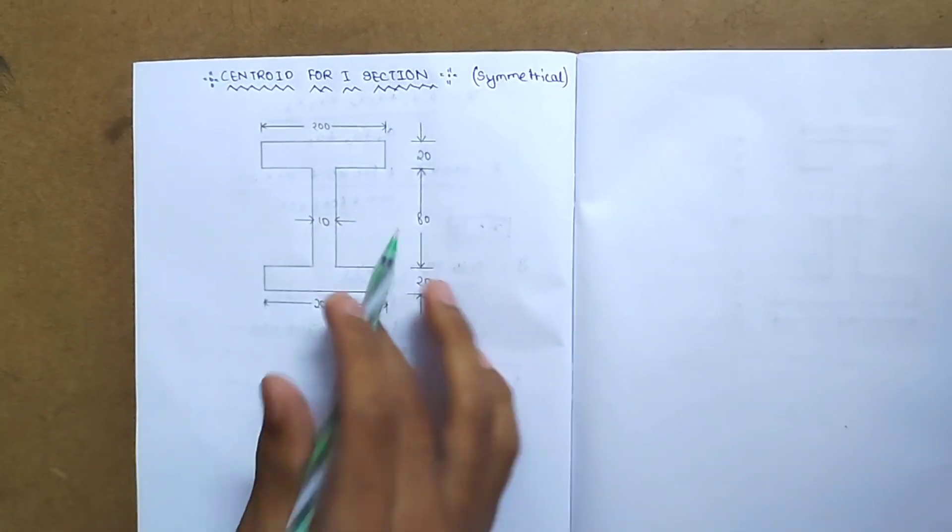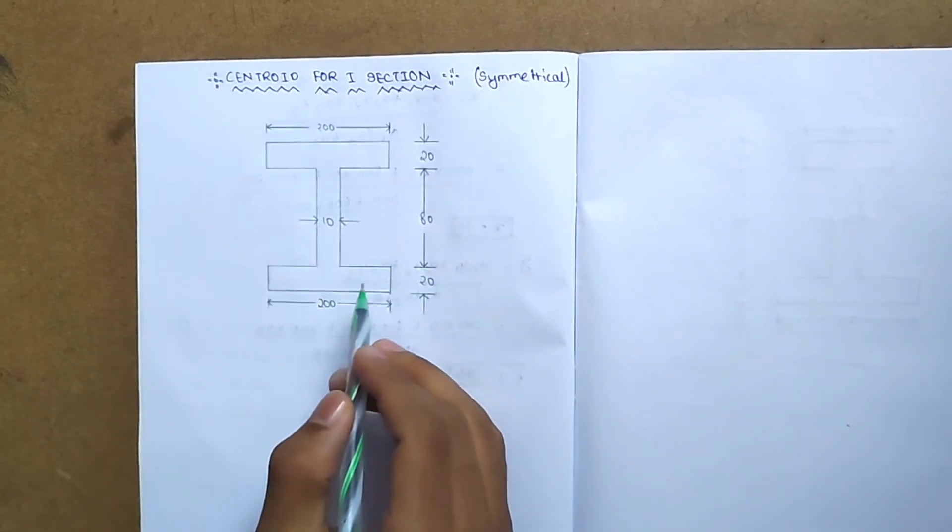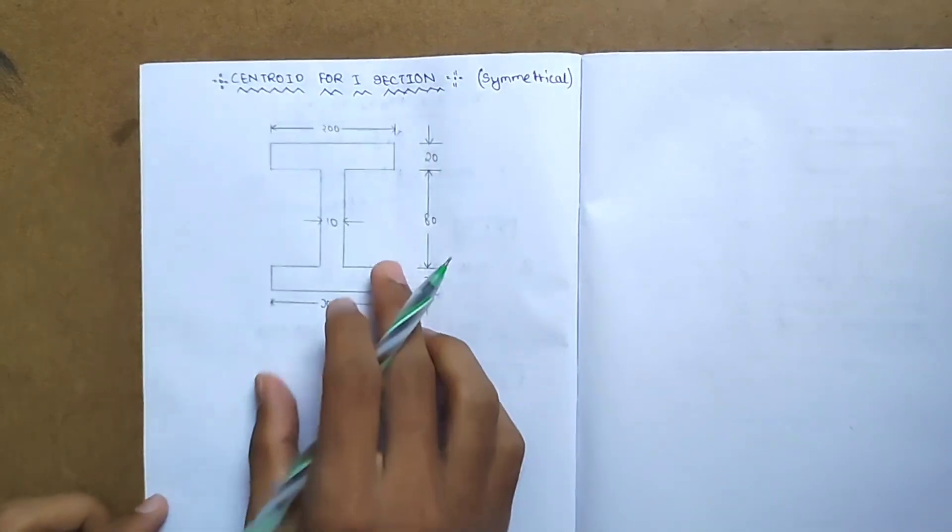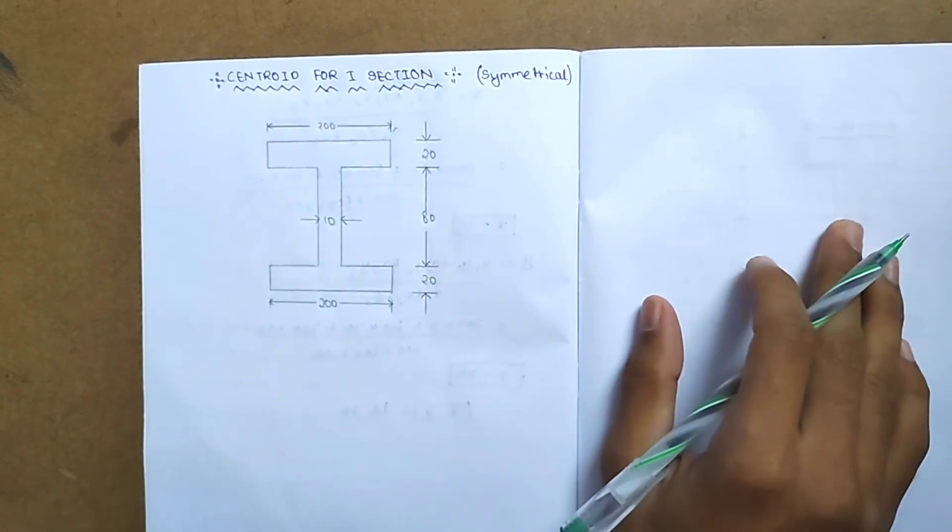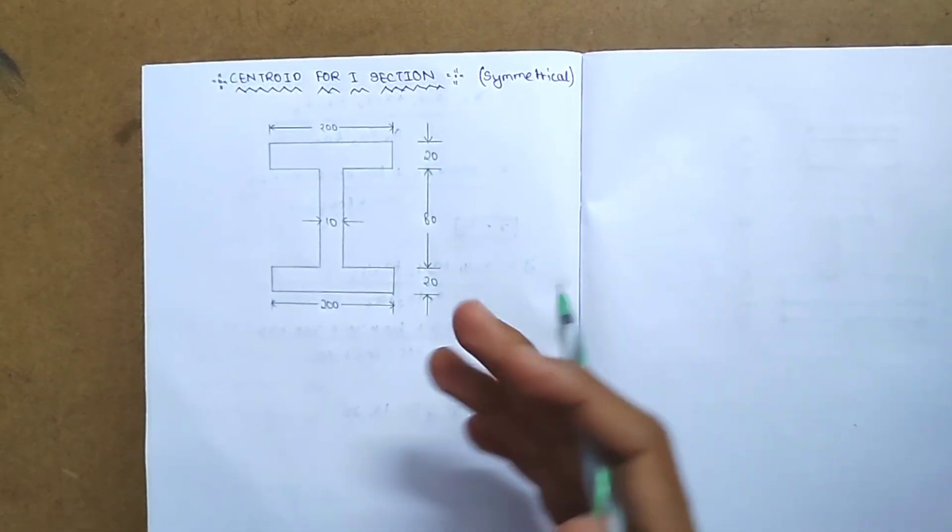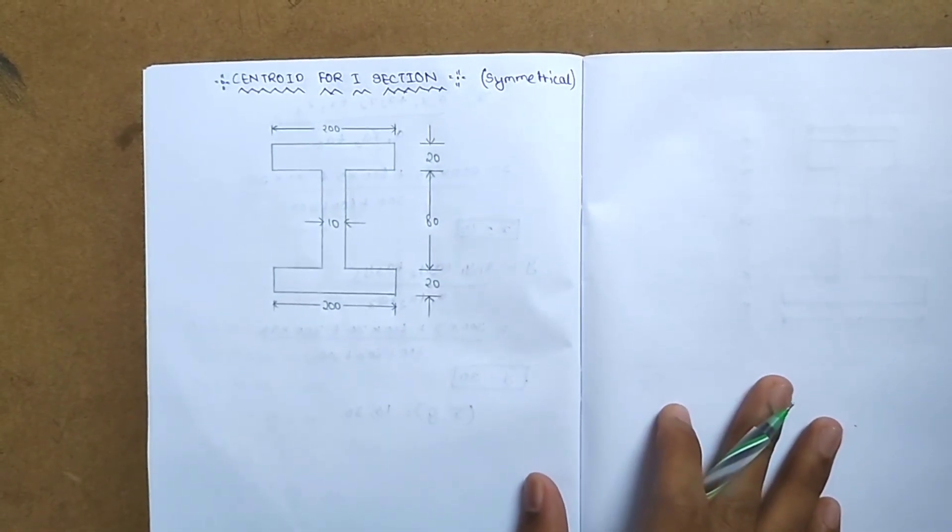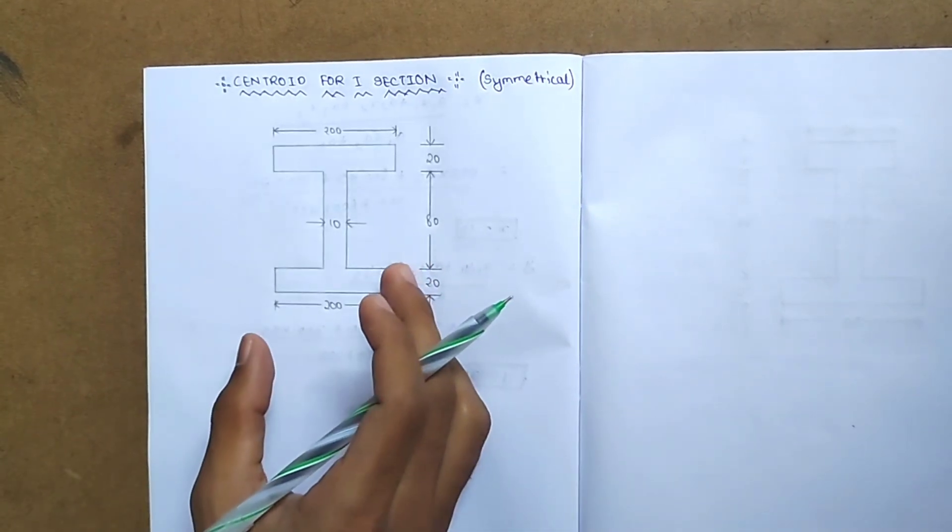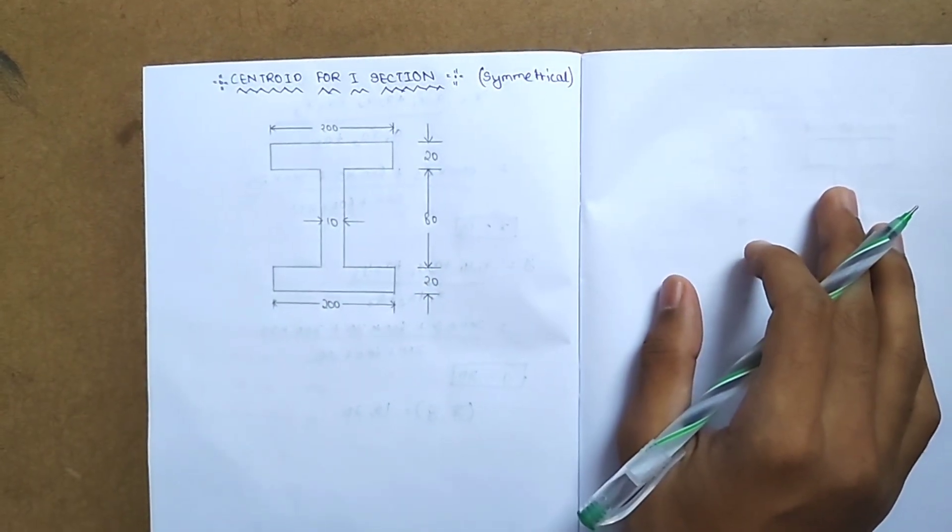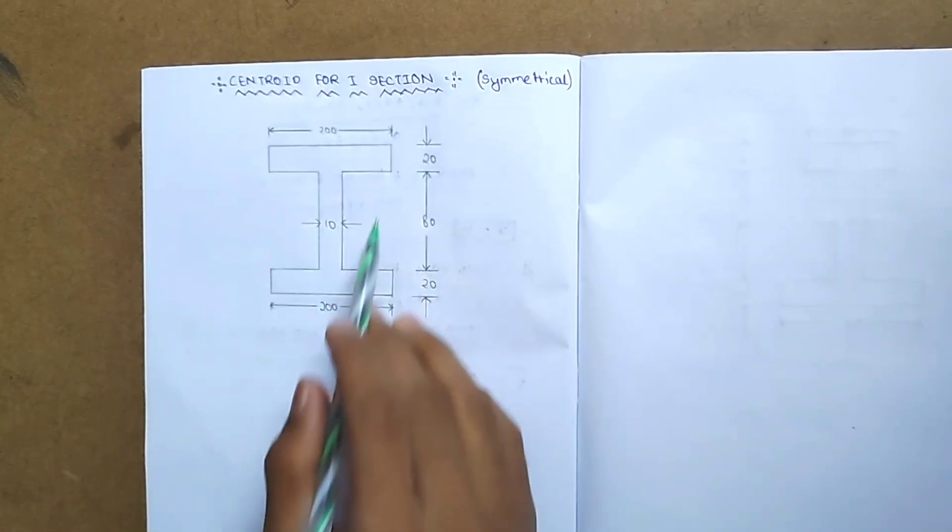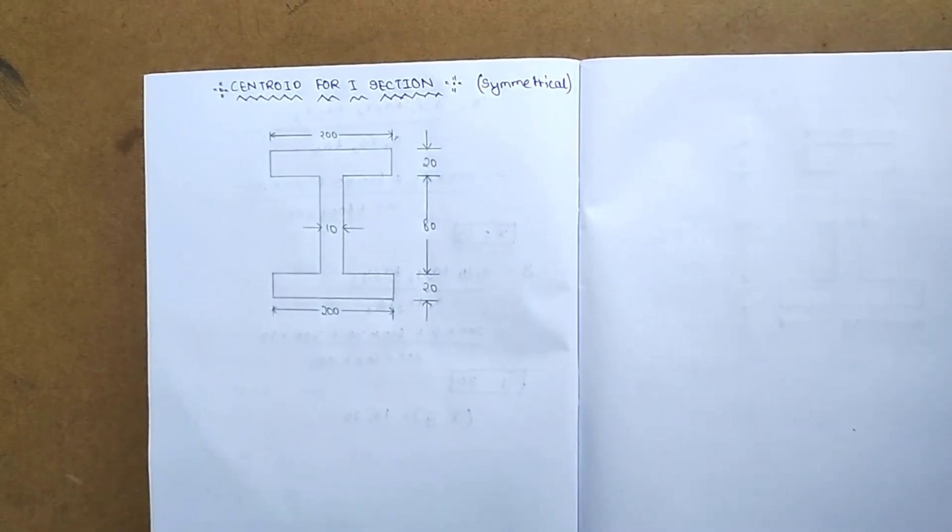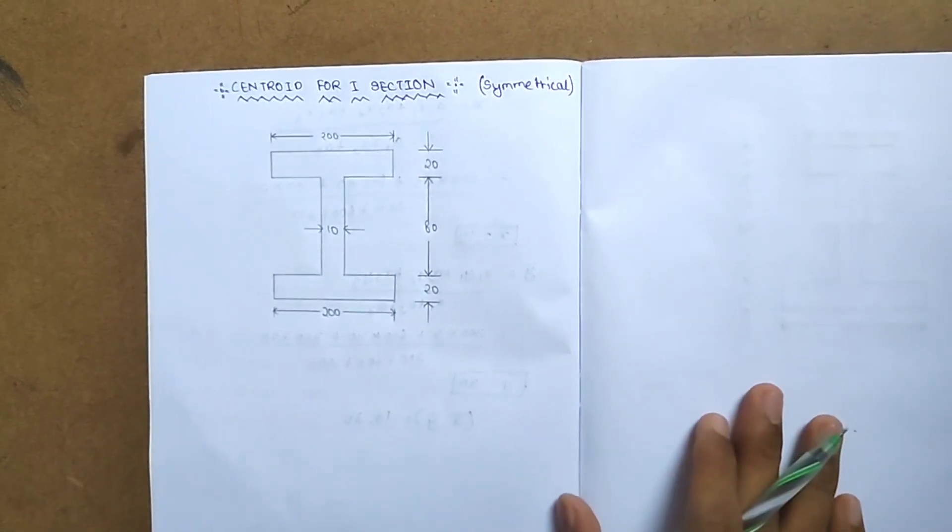We'll divide the I-section into suitable rectangles and find x1, x2, x3 to calculate x-bar and y-bar. This I-section is symmetrical. The I-section has three parts: the top flange, bottom flange, and web.